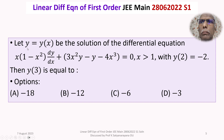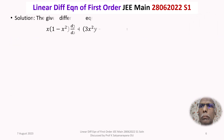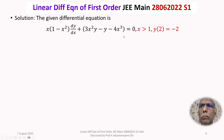If y = y(x) is the solution of this differential equation with this initial condition, we are required to find the value of y when x = 3. We have the given differential equation and condition x > 1, and the initial condition y(2) = -2, that is the value of y is -2 when x is 2.